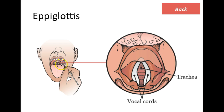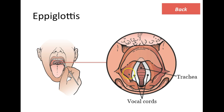Let's look at the epiglottis in detail. This is the epiglottis when we open our mouth, and this is the zoomed-in view. It is composed by the vocal cords, and over here we can see the trachea. The vocal cords are the ones that produce sound — they produce both voiced and voiceless sounds.